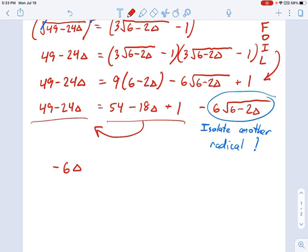And I've got a total of 55, right, 54 plus 1 is 55. And if I move that over to the other side, it's going to give me negative 6.